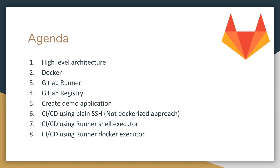After that we are going to talk about GitLab Runner. It is really important because it is the way we have to communicate from GitLab to Docker. After that we are going to talk about GitLab Registry, which is really similar to Docker Hub — it is a place where we can store our images. Then we are going to create a demo application. I will choose an application as easy as possible because the main idea of this tutorial is to understand how all these things work together, not to talk about how to code in any specific language.